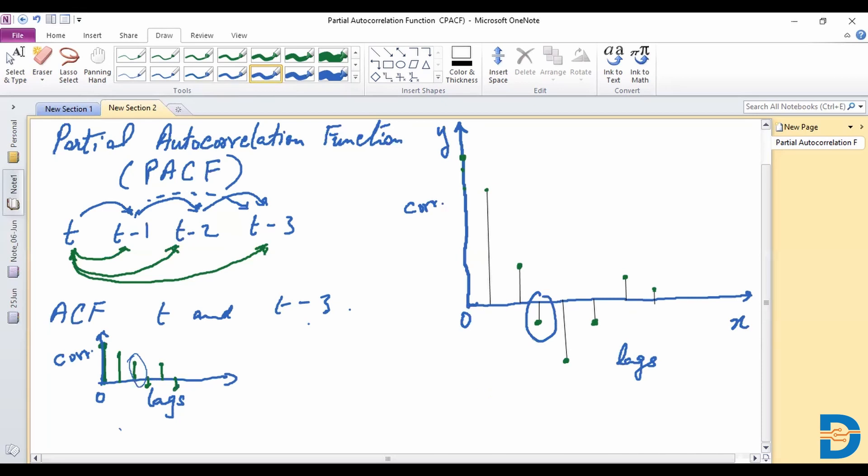And at that point, what we are saying is for us to get this partial autocorrelation function, we are assuming that to begin with t as well as t minus 3 are both correlated to the observations in between. Both t minus 3 and t are correlated to these observations.